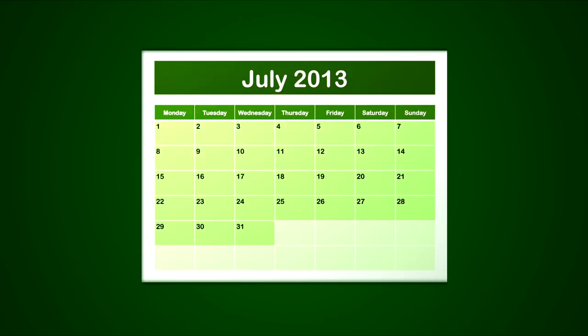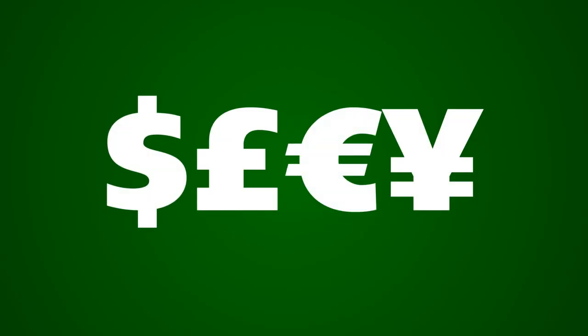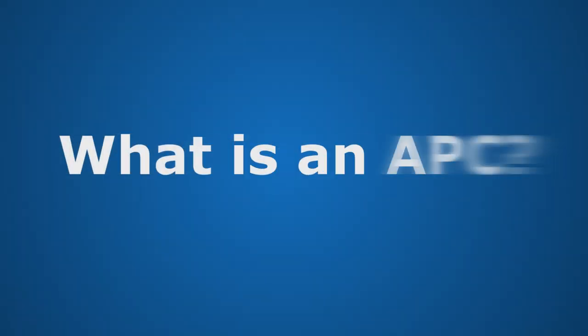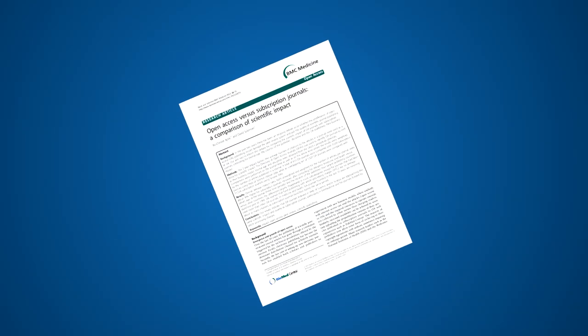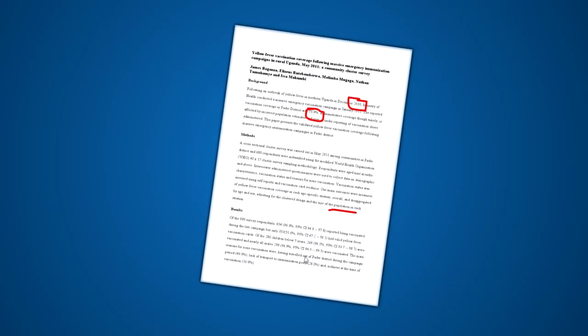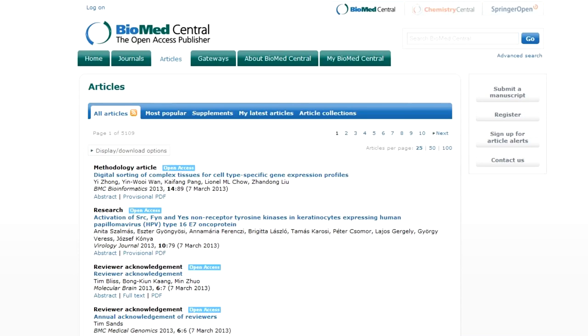Allowances on embargo times may be allowed if funds are not available to cover APCs. An article processing charge is a fee that pays for the processing and publication of the article. This includes the editorial and production process, as well as ensuring safe and efficient hosting and distribution, ensuring research is widely read and cited.